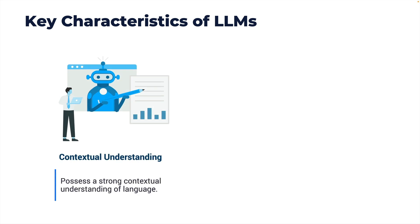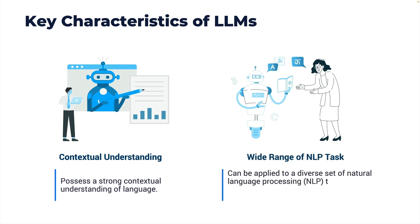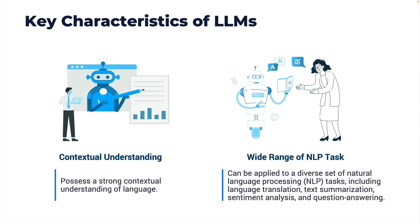LLMs also possess a strong contextual understanding of language. They consider the context of a word or phrase when generating text, allowing them to produce coherent and contextually relevant responses. This ability to grasp context is a key factor in their impressive language generation capabilities, and it enables LLMs to address a wide range of NLP tasks such as translation, text summarization, sentiment analysis, and question answering.